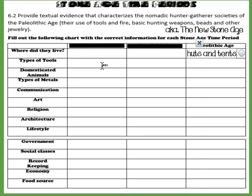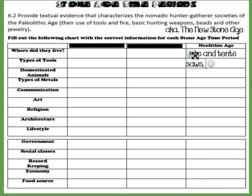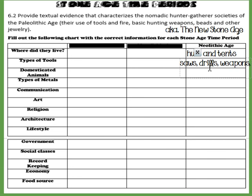For types of tools: in the Paleolithic they used simple tools — rocks, sticks, twigs, anything found in nature to help them get food and survive. In the Mesolithic they started making canoes, spears, bows and arrows, and the hand axe. In the Neolithic they're getting even better, beginning to make saws, drills, weapons — and not for war yet, they are still in survival mode — and polished, sharpened stones.